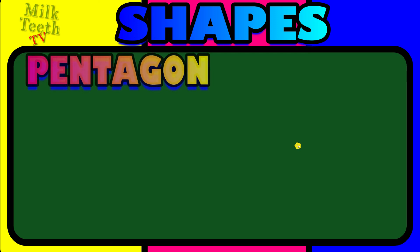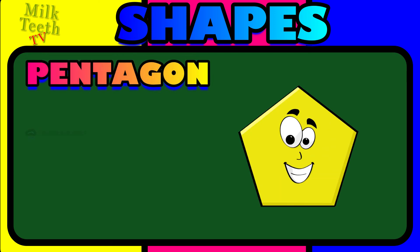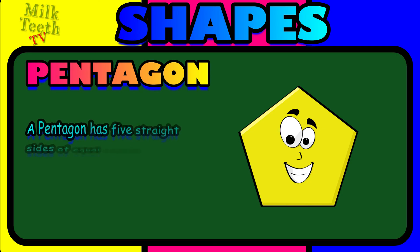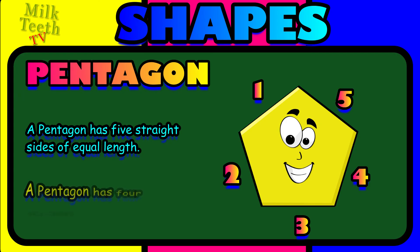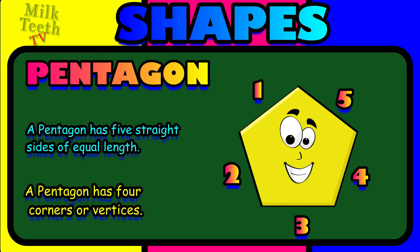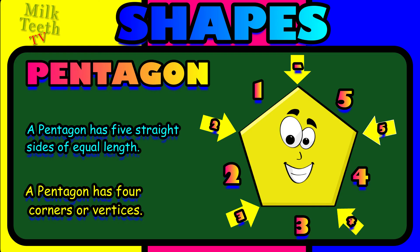Pentagon. A pentagon has five straight sides of equal length: one, two, three, four and five. A pentagon has five corners or vertices: one, two, three, four and five.